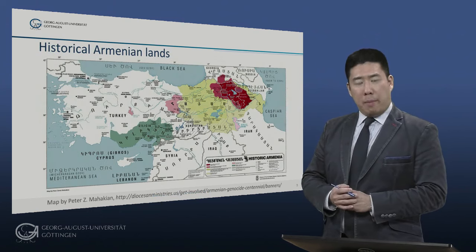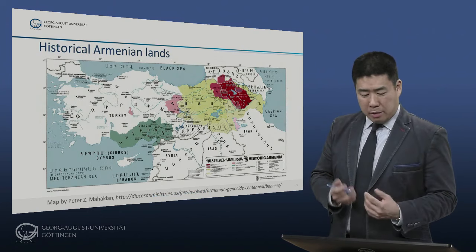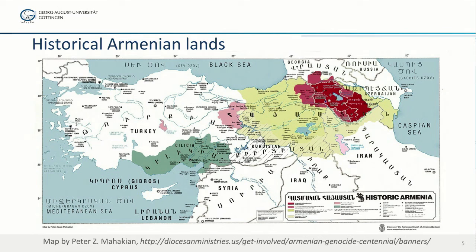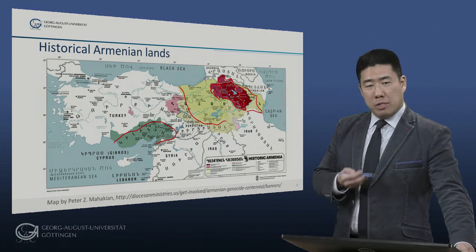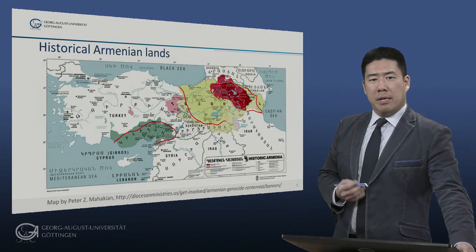This map shows the historical Armenian lands. In dark red, this is the boundary of the modern Armenian Republic since 1991, formerly the Armenian SSR in the Soviet Union. The lands around it belonged briefly to the Armenian Republic right after World War I. These are the lands that were heavily settled by Armenians until 1915. And over here on the Mediterranean, we have Cilicia, which was home to an important kingdom in the later Middle Ages.